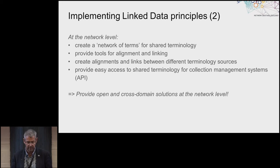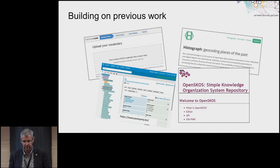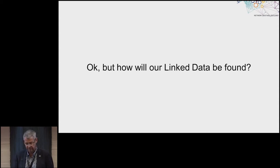At the network level, we try to provide things for the institution. We have shared terminology sources being published in the right way. We provide APIs that can be implemented in systems. And we're really building on previous work, because a lot of these ideas have been around for a number of years. We use commercial tools — there's the Pool Party tool, which we use for shared building of authority lists — but also specialized tools that have been created in the Netherlands. So basically, we say, let's build your data as linked data in the right way, use the right URIs and the right references, and make your data available.